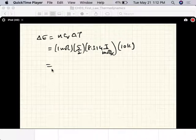Alright, so 2.5 times 8.314 times 10. So the increase in energy is 208 joules.